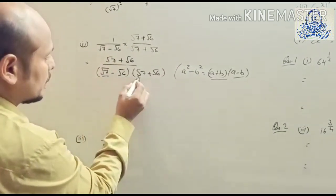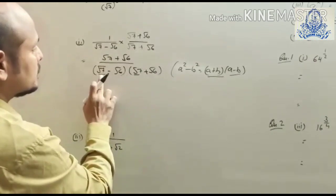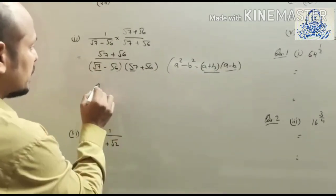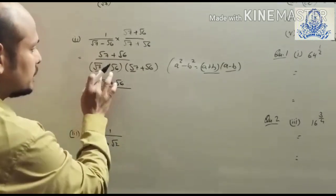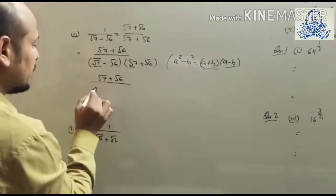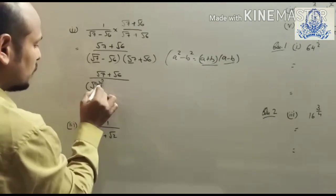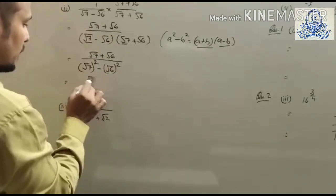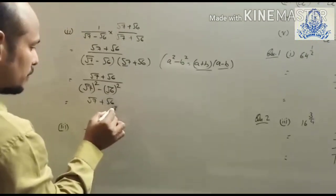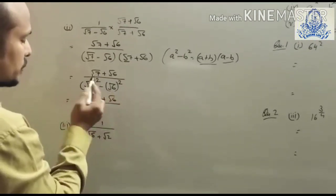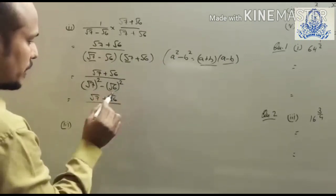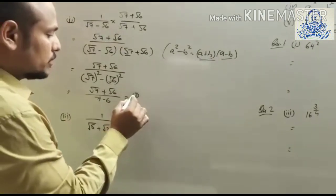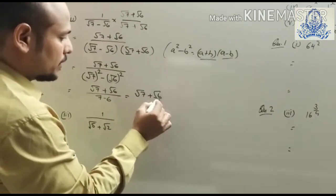Here a is root 7 and b is root 6. So we write the numerator as it is. In the denominator, applying the formula gives (root 7)² minus (root 6)². The square and square root cancel for each term, giving 7 minus 6, which equals 1 in the denominator. Since the denominator is 1, no need to write it, so our final answer is just the numerator.